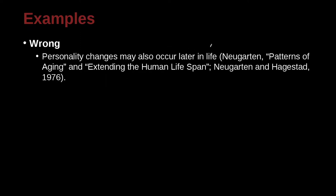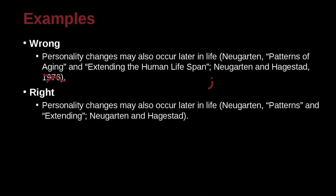Personality changes may also occur later in life — Newgarten, 'Patterns of Aging' and 'Extending the Human Lifespan'; then Newgarten and Hagstad, 1967. Clearly 1967 is wrong because we do not include years in MLA. What's interesting here is Newgarten is the author of one work, and Newgarten and Hagstad are authors together on another. We have two citations separated by a semicolon. We use 'and' here — that's different from APA; in MLA we do not use the ampersand, even inside parentheses.